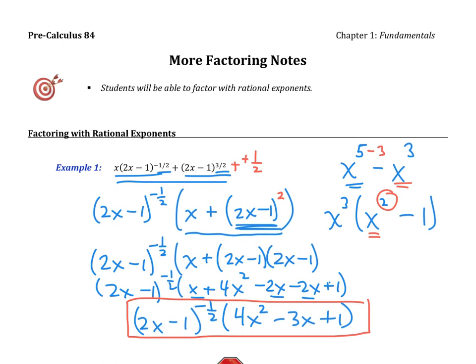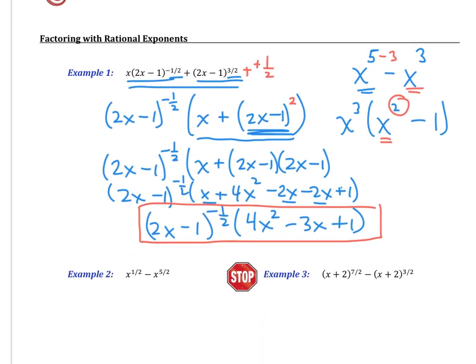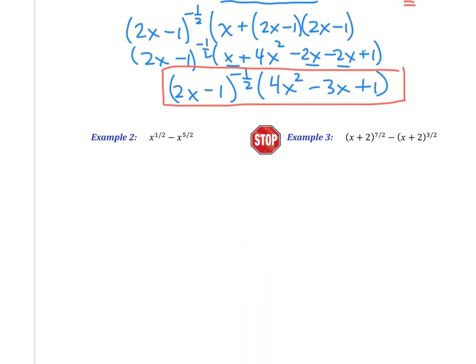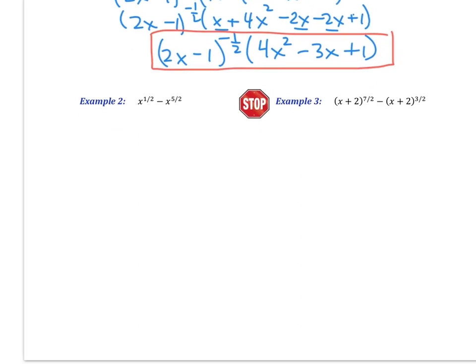And again, big idea. Remember, when we're factoring out, we're actually subtracting the exponents because we're dividing. All right, since this is new, we'll try another example.